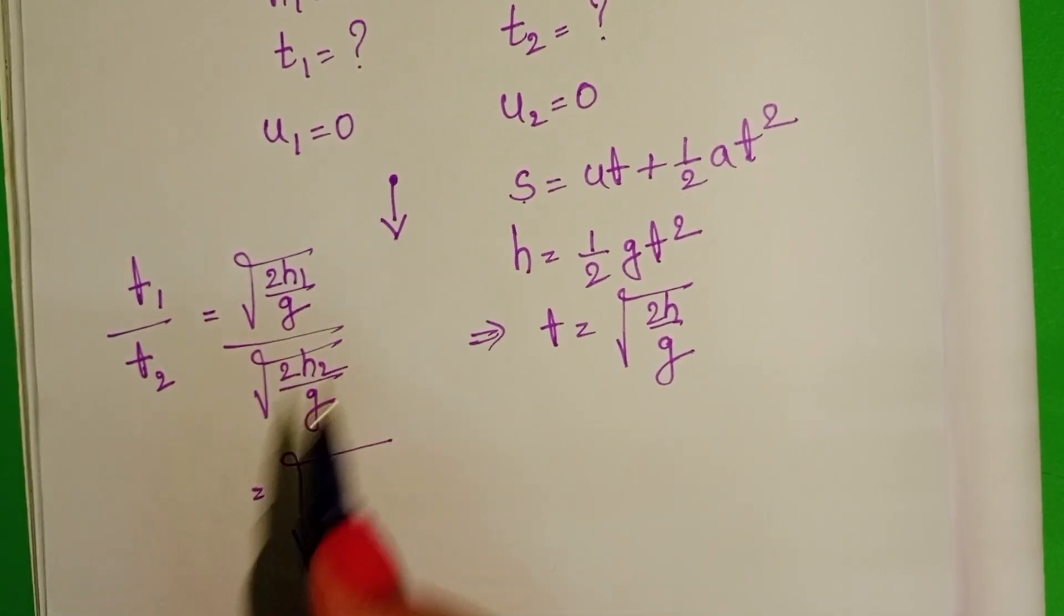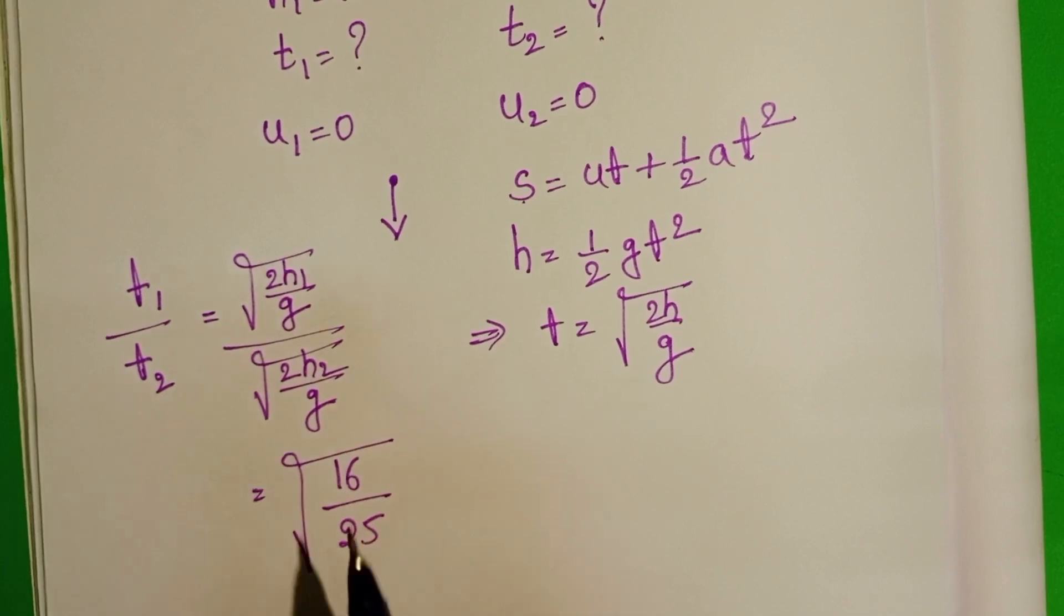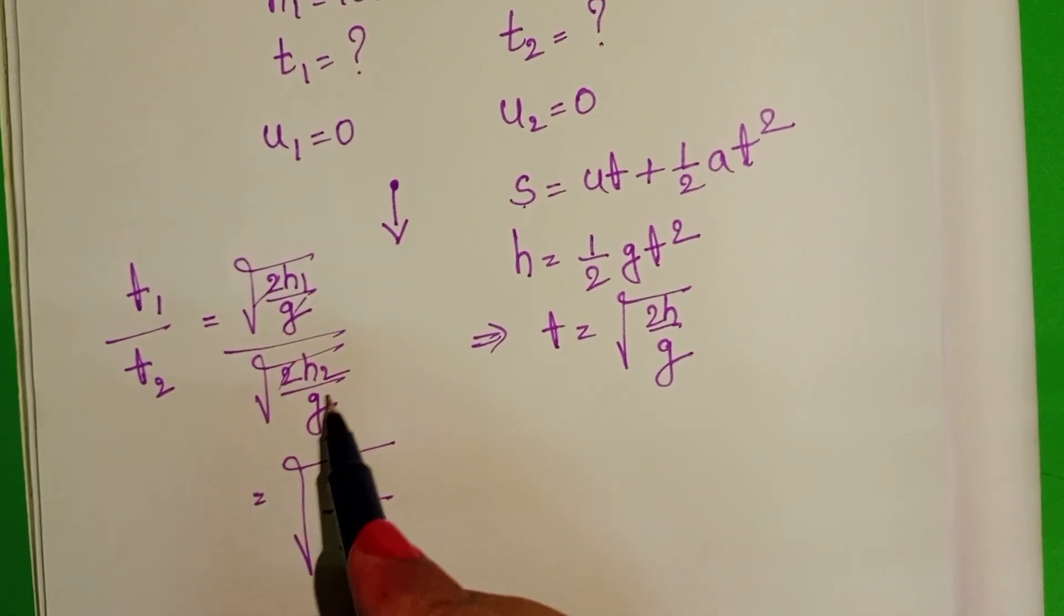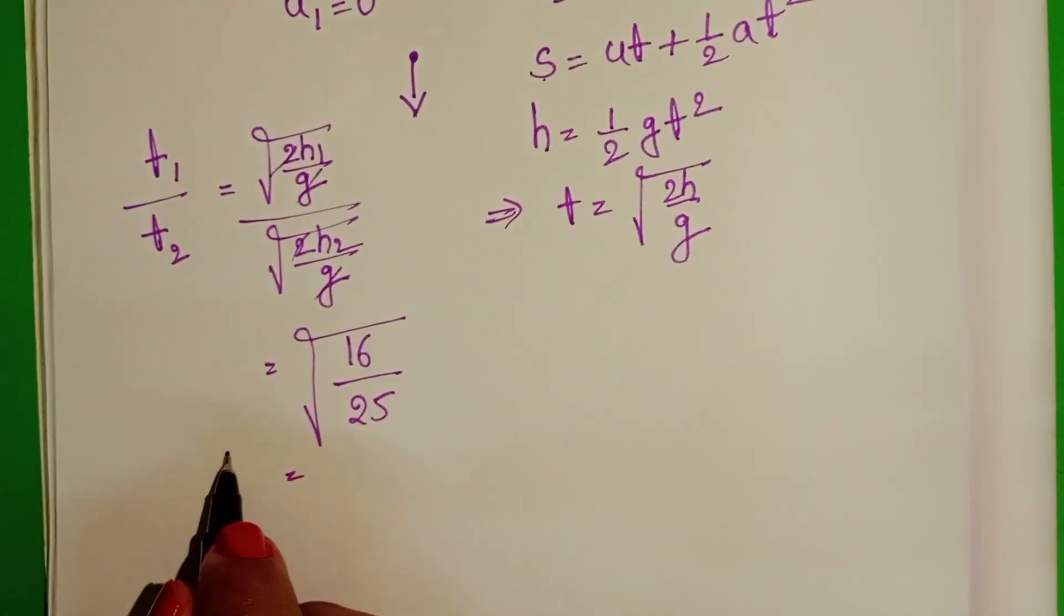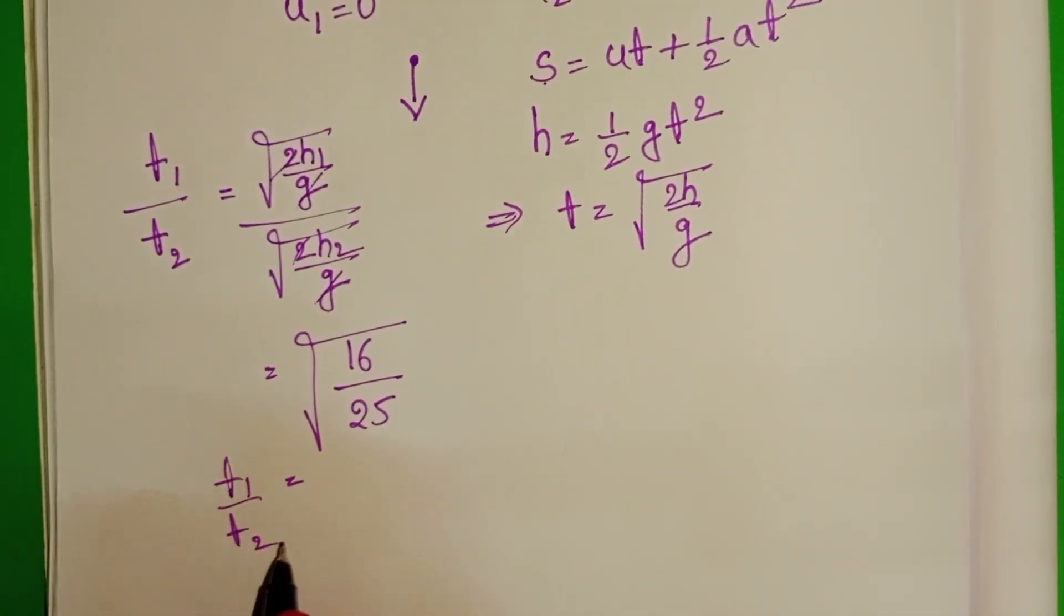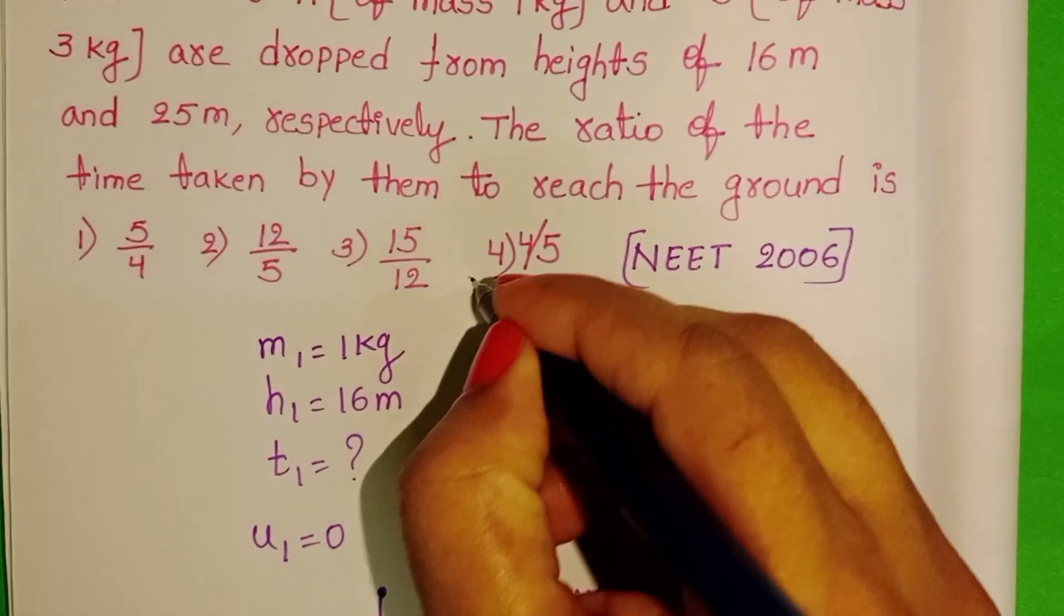H1 is 16, H2 is 25. Since 2 and g get cancelled, T1 by T2 equals square root of 16 by square root of 25, which equals 4 by 5. Fourth option is correct.